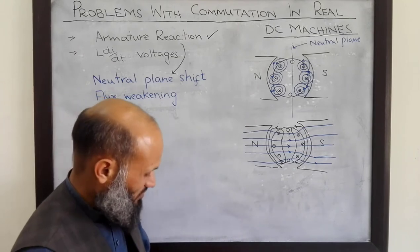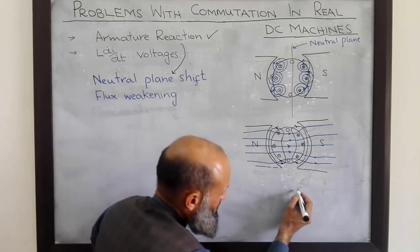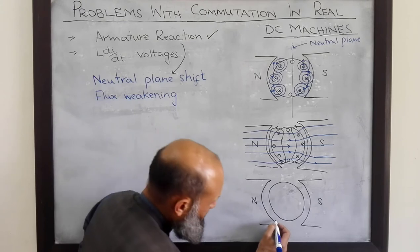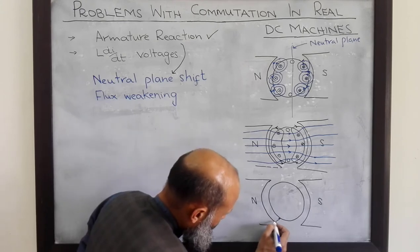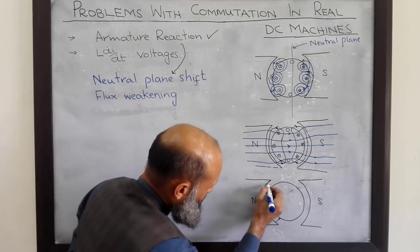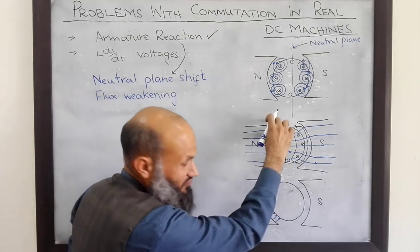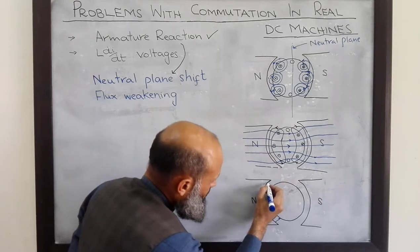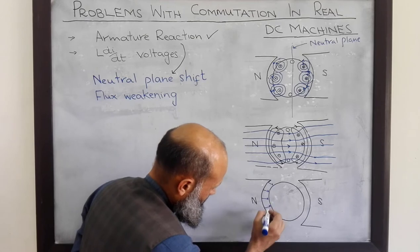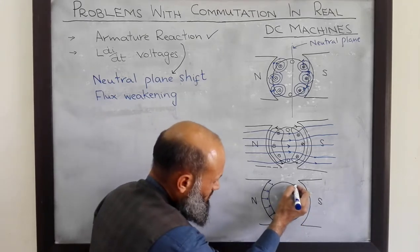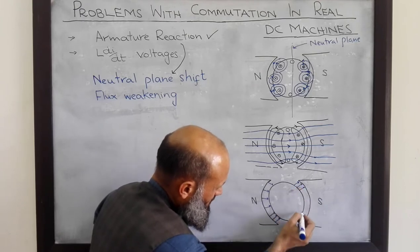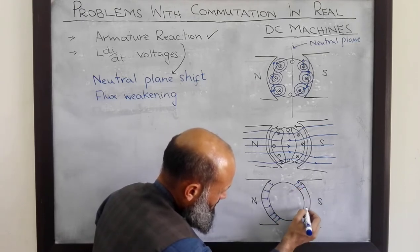That is the net MMF situation in the machine, as depicted in this figure. At this end, MMF has increased, so we have more flux lines — higher density of flux lines. And here, MMF has decreased, so we have less density of flux lines. MMF increased at this end and MMF decreased at this other end.